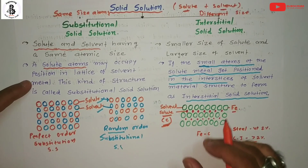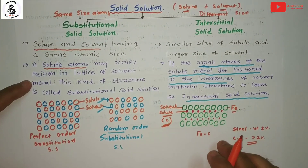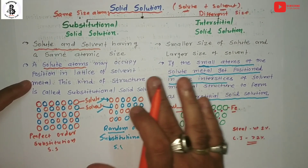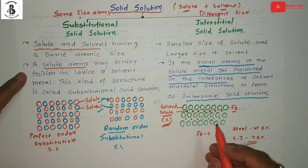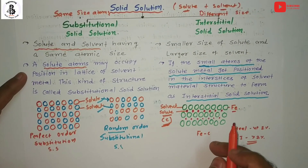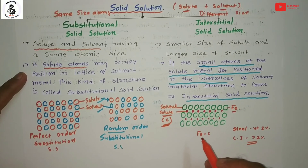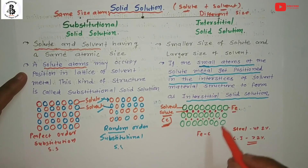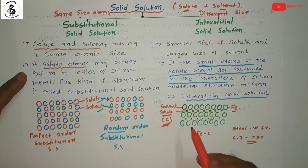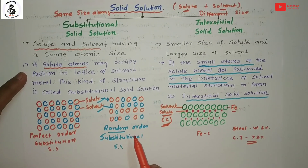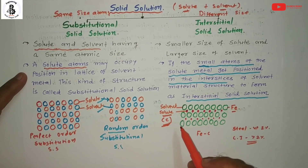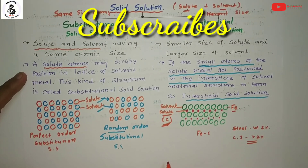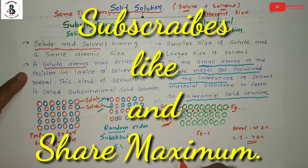So we have covered substitutional and interstitial solid solutions. When you mix two metals to form a new material, the arrangement into the structure depends on the size of the solute and solvent atoms, which divides solid solutions into two basic categories. If you like this video, please subscribe and share Modi Mechanical Engineering Tutorials. Thank you so much and keep watching.